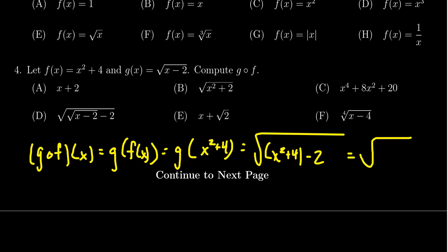We can combine the like terms there; we're going to get the square root of x squared plus two, which then leads us to select option B.